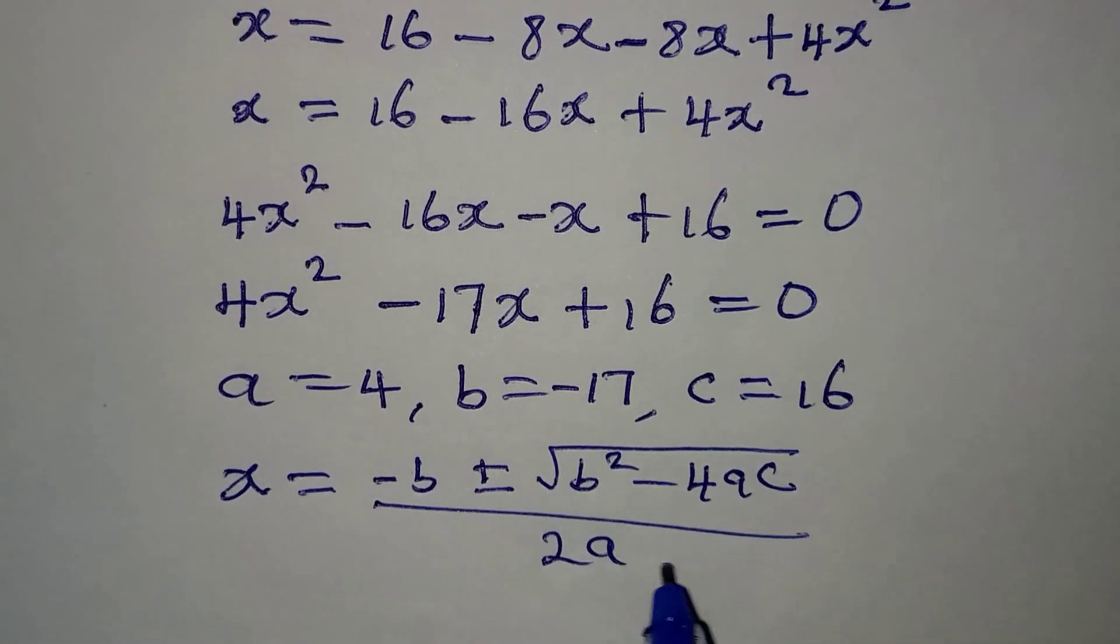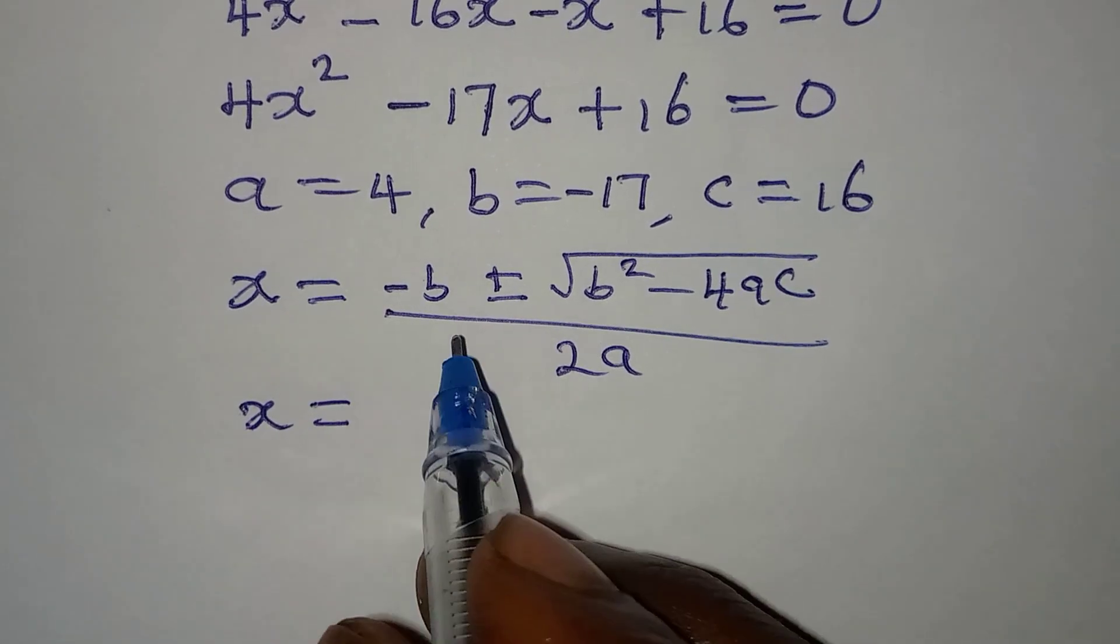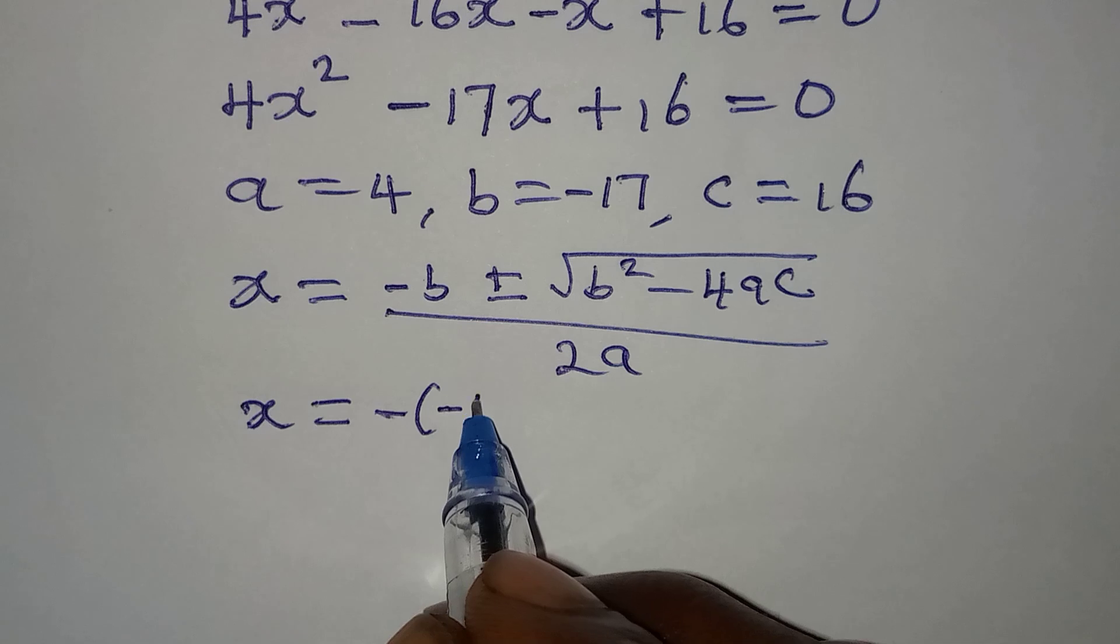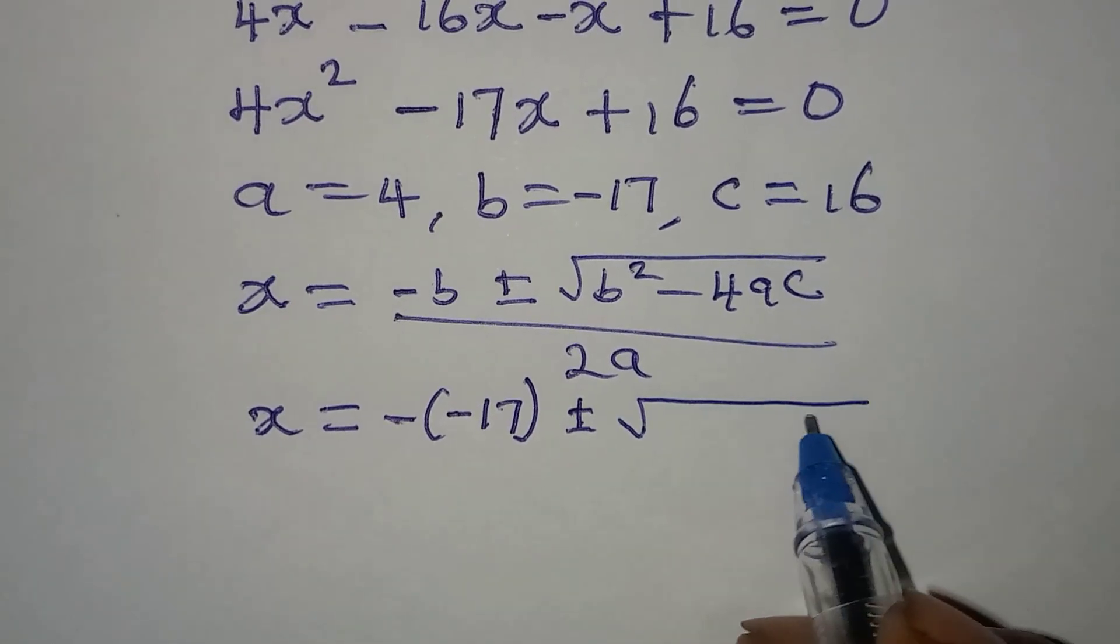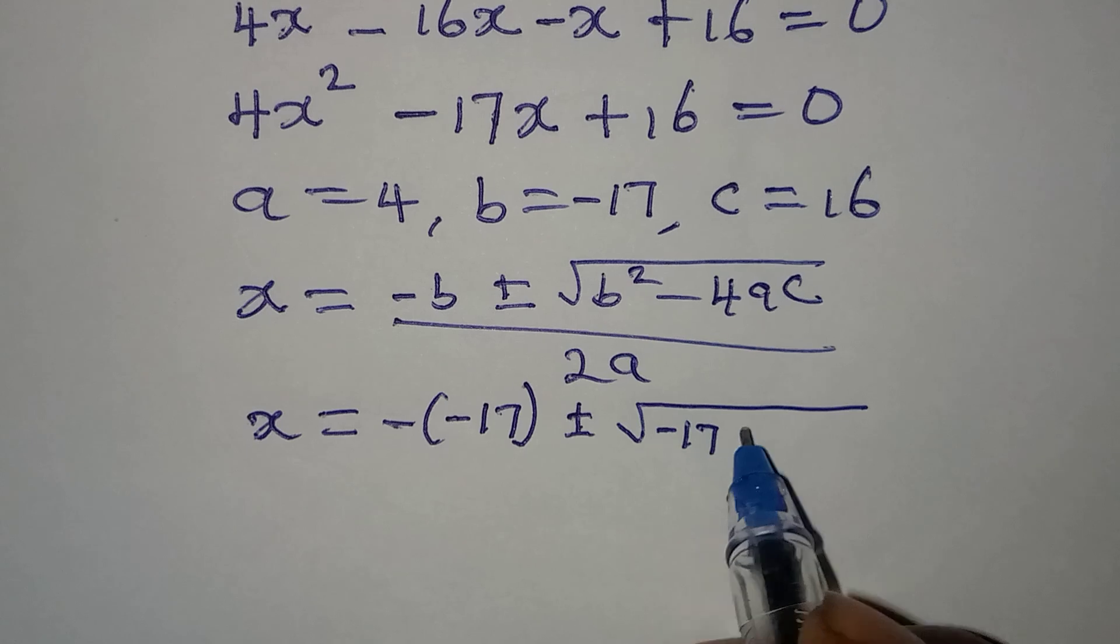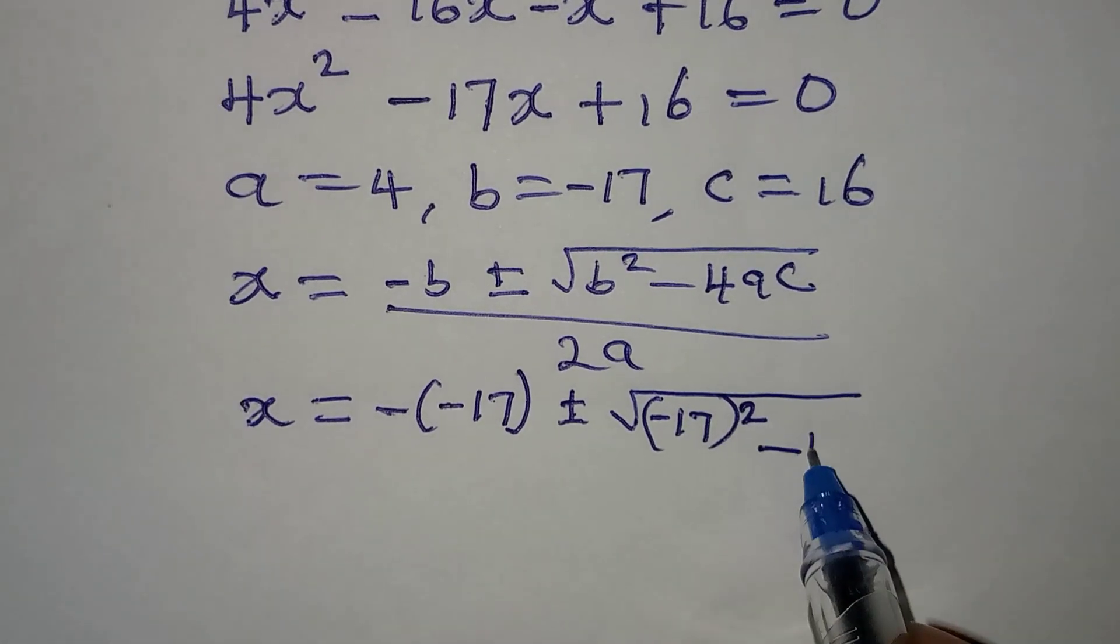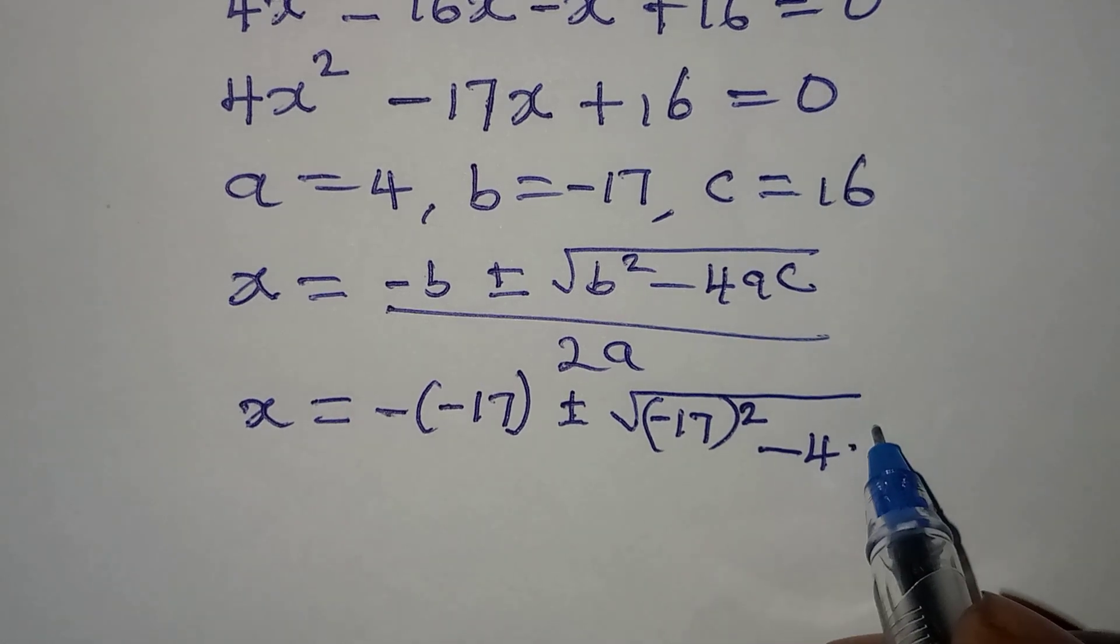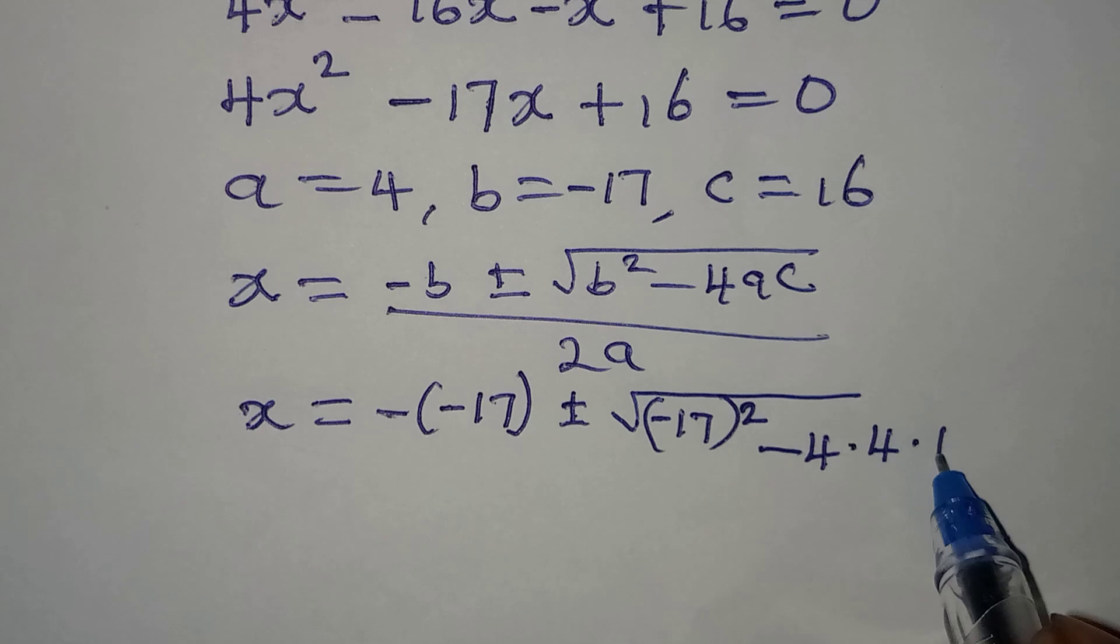Now our x will be -(-17) ± √((-17)² - 4(4)(16)) over 2(4). We have c to be 16.